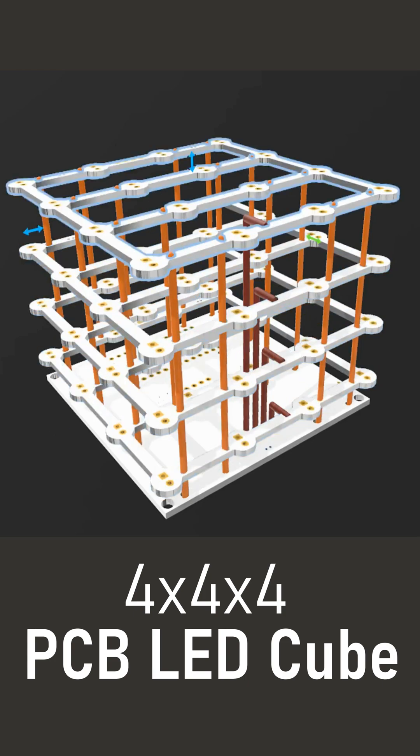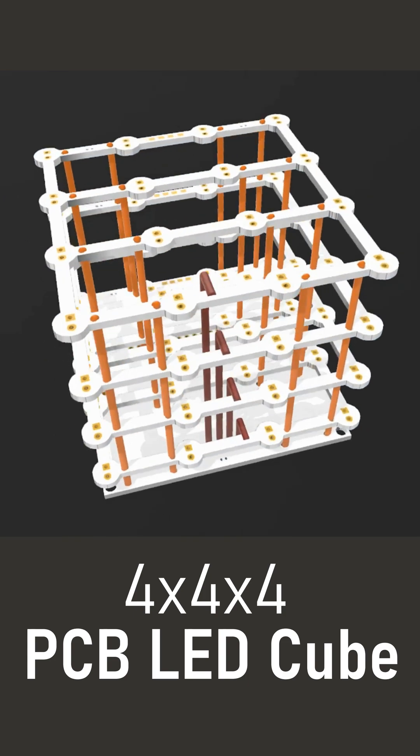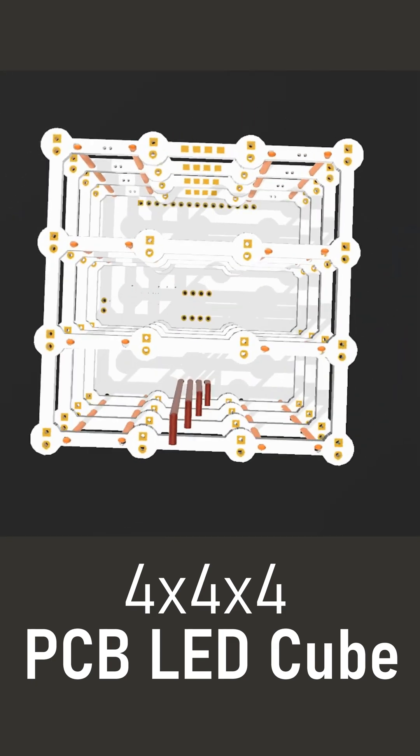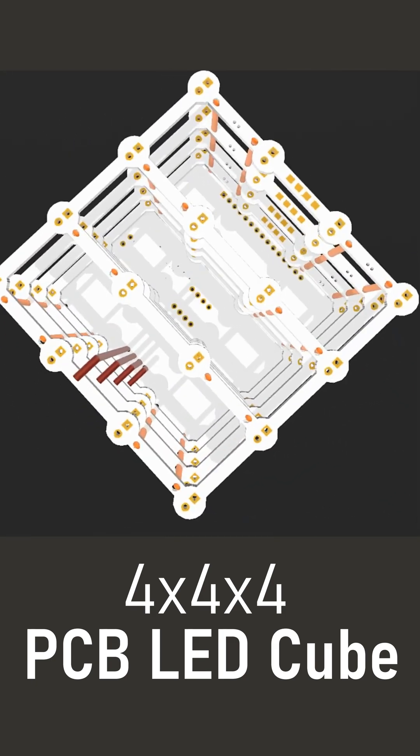Once all the wires are soldered to the top section of the base plate, I will one by one slide the LED meshes over these wires and solder them accordingly to form the top four layers.